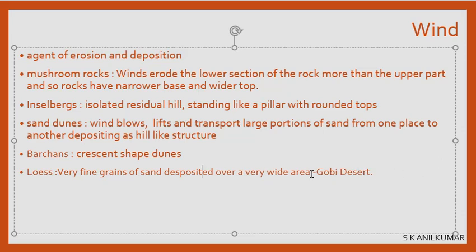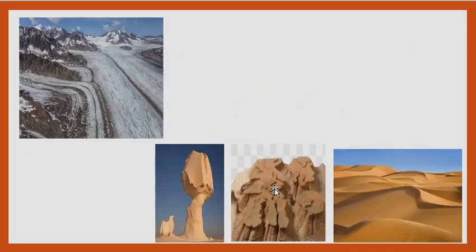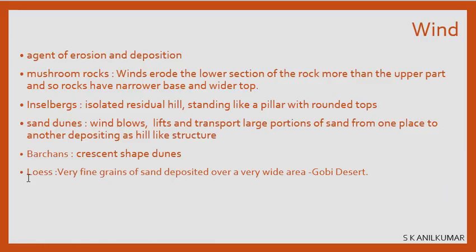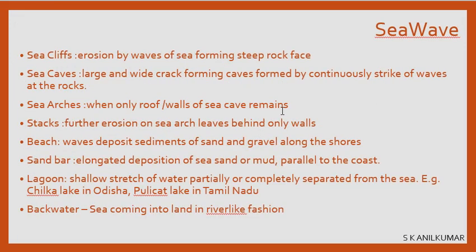Loess is fine grains of sand deposited by wind over a very wide area — not in a hill shape, but spread out equally as very fine grains over a large area, creating beautiful shapes, designs, and patterns when viewed from above. Loess is very popular in China, in the Gobi Desert region. So loess, barchans, sand dunes, inselbergs, and mushroom rocks are all caused by wind.